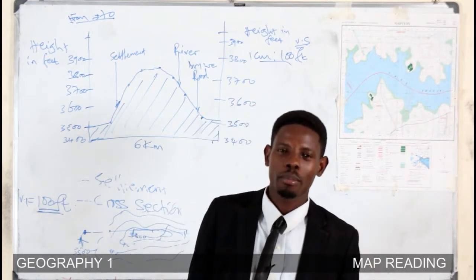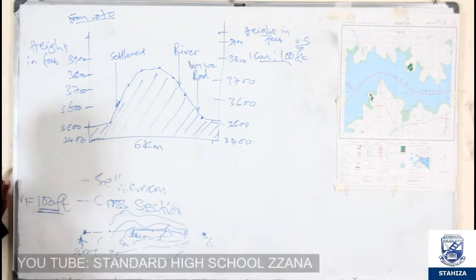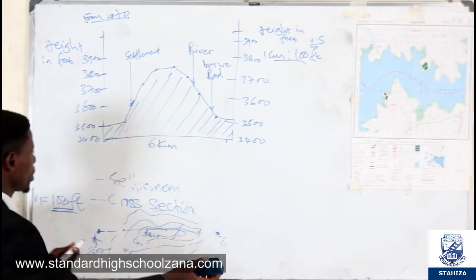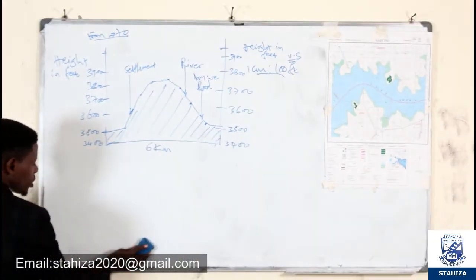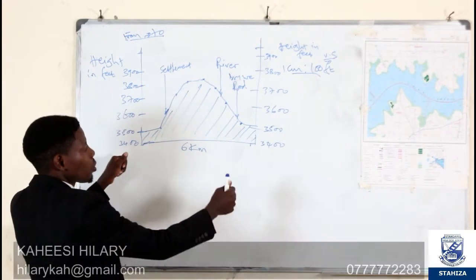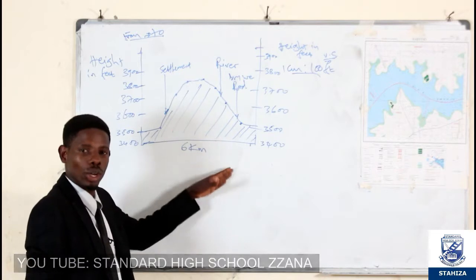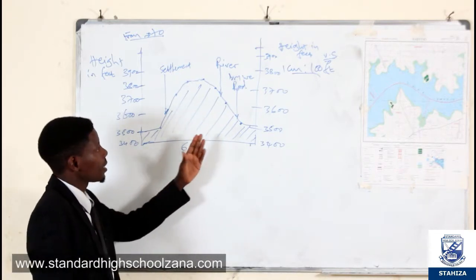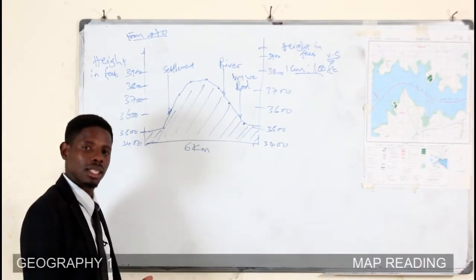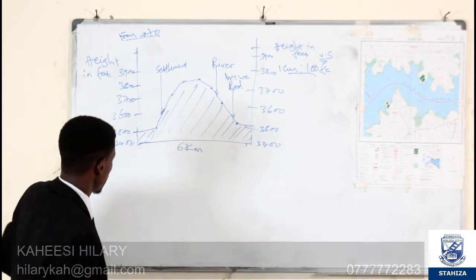Welcome to this episode of map reading. In the last episode we talked about how to draw a cross section — you join the two points in question, use a piece of paper or graph paper to demarcate the contours, then transfer what you have demarcated to the graph paper, put the horizontal distance and get the scale. You write your title showing where the cross section started and ended and the different features it is presenting.